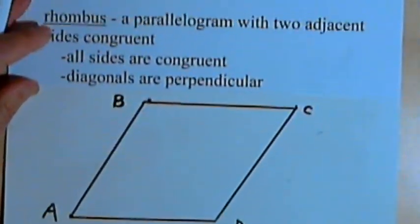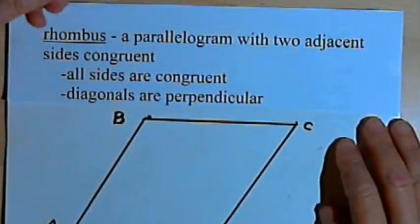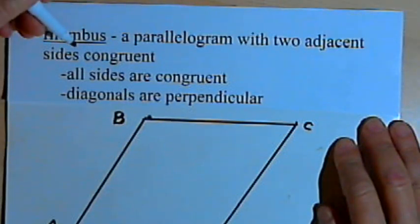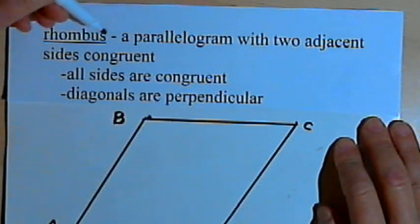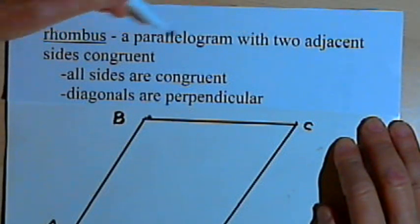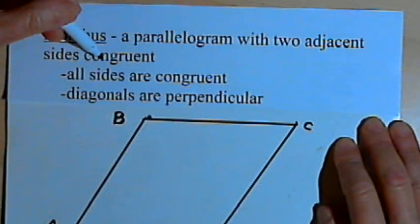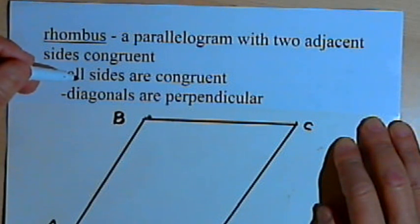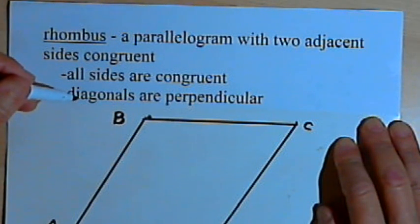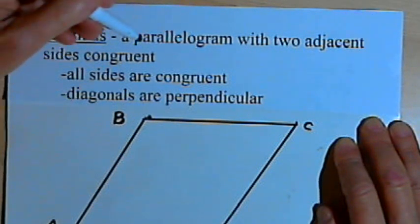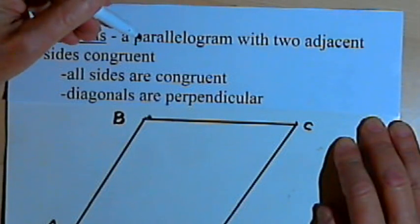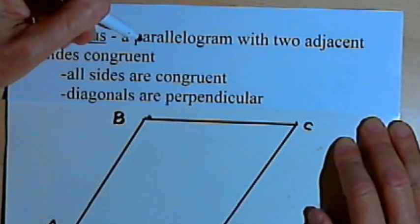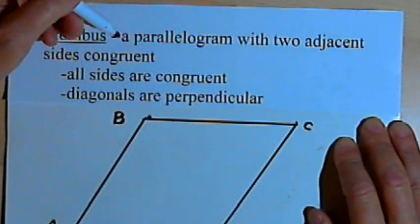So let's start with a rhombus. The formal definition for a rhombus is that it's a parallelogram with two adjacent sides congruent. We also have two properties for a rhombus: all sides are congruent and the diagonals are perpendicular. So let's start with that definition — a parallelogram with two adjacent sides congruent.